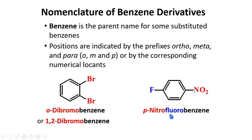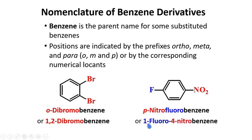This relationship is called para. The name of this compound is para-nitrofluorobenzene. Notice that we call it first as fluorobenzene — fluoro being first in alphabetical order. In IUPAC nomenclature, alphabetical priorities are used, so the substituent that comes first alphabetically is named first. This gives us 1-fluoro-4-nitrobenzene.